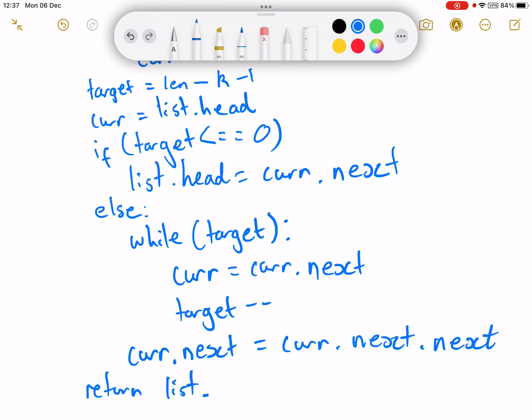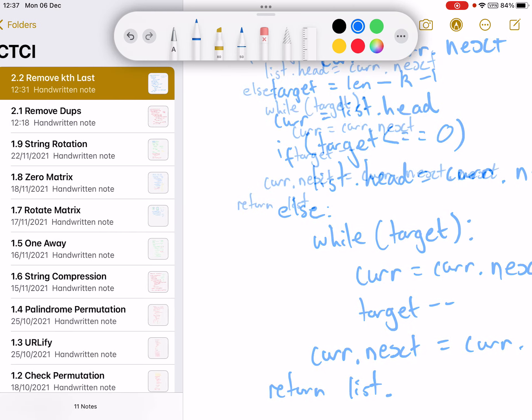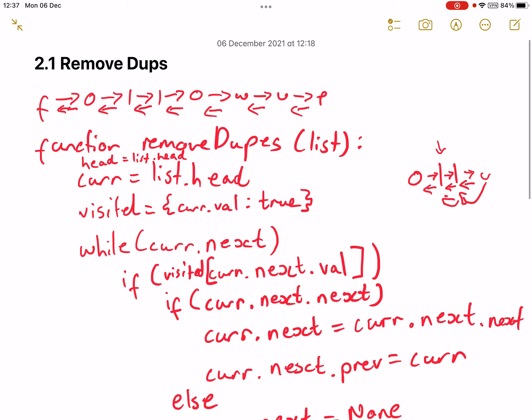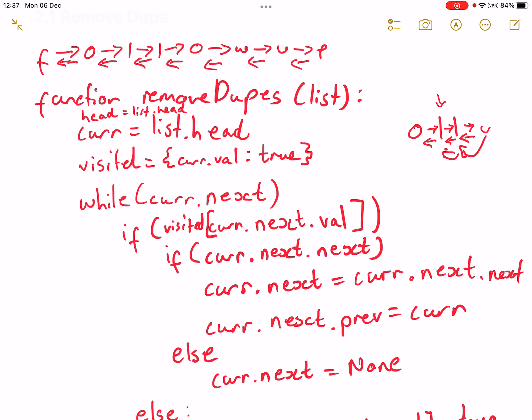I'll run with it. So then 2.1 the remove duplicates - what we did here was I looked into the next one and then I'll delete the next one instead of the current one.